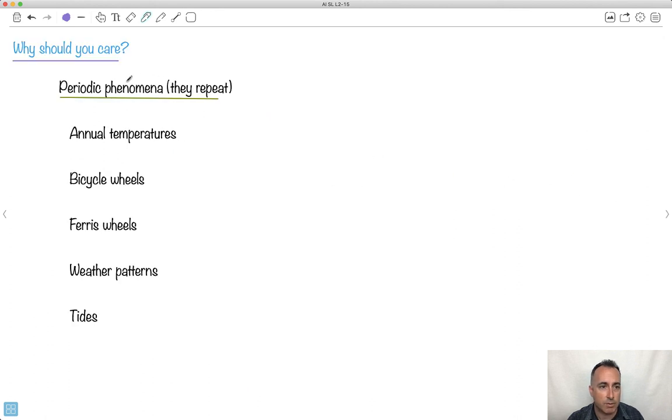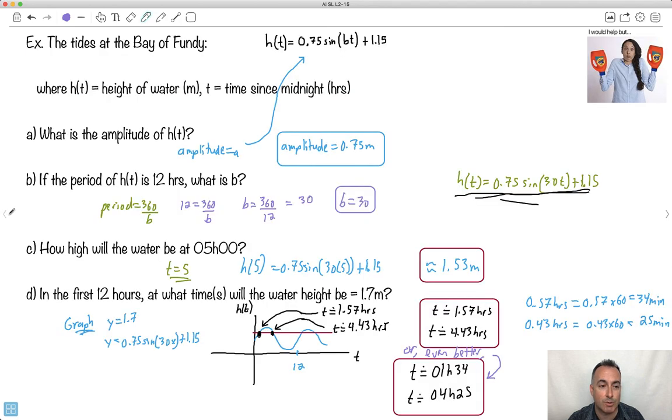Why would you ever care? Well, there's lots of periodic phenomena in the world. There's like annual temperatures go up and down. Even a bicycle wheel, if you think about its height over time, that is periodic and sinusoidal. So is a ferris wheel's height above the ground. Weather patterns repeat continually. Tides like we just saw. So there's lots of different examples of sinusoidal phenomena.